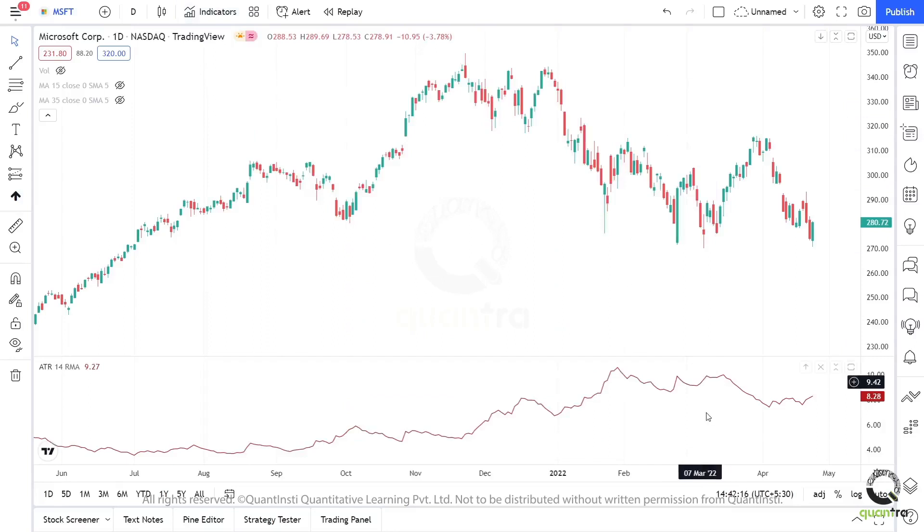Here's what the indicator looks like. You will immediately notice a sub-graph below your price chart. The default period used for the ATR calculation is 14. This indicates that we will look at the data of the past 14 candles in the current timeframe in order to compute the current value of the ATR.